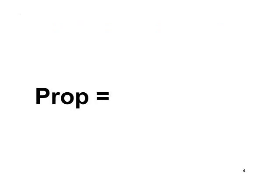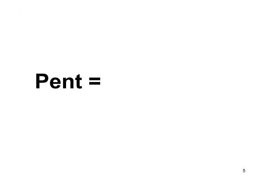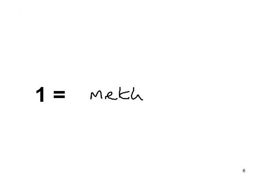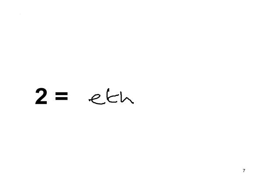Let's have a go. How many carbons has a compound with the prefix prop? Yes, three carbons. And pent? That's an easy one — five carbons. What prefix would you use for one carbon? It would have to begin with meth. And for two carbons? That's called eth.